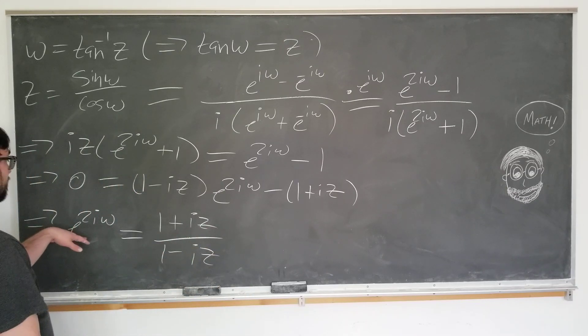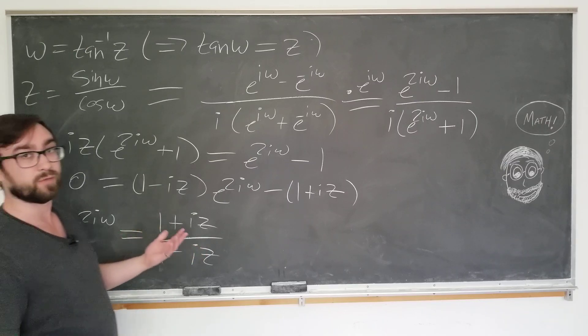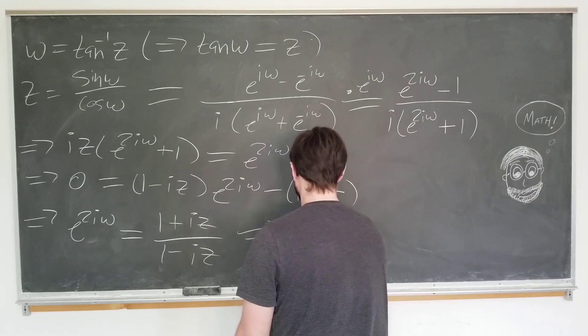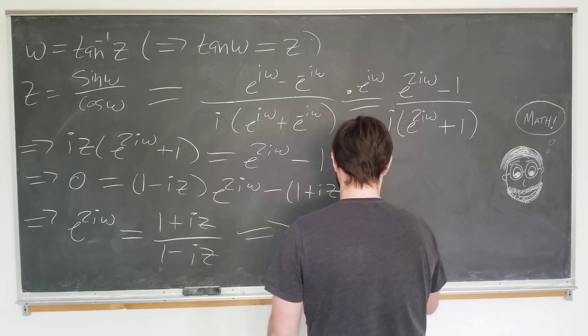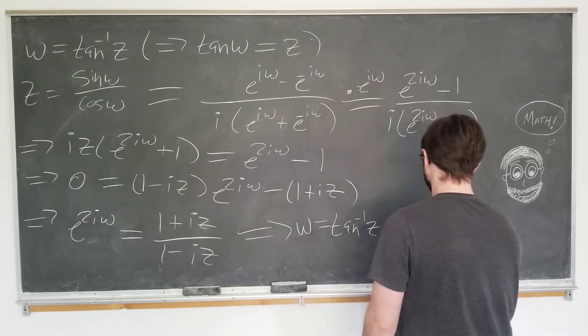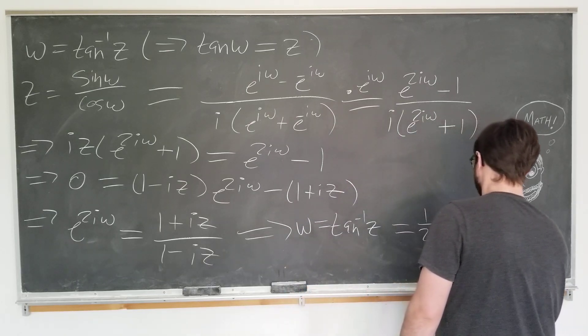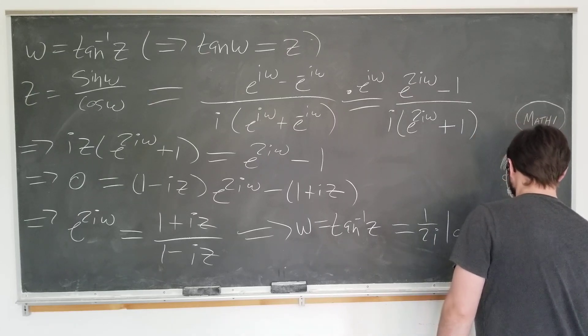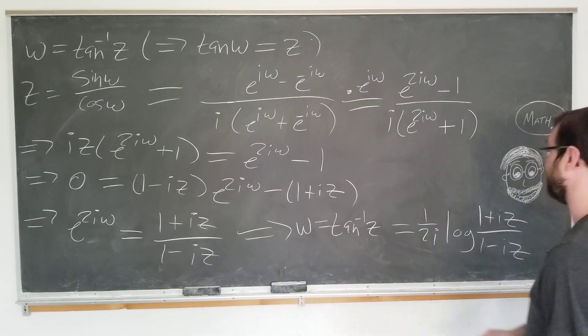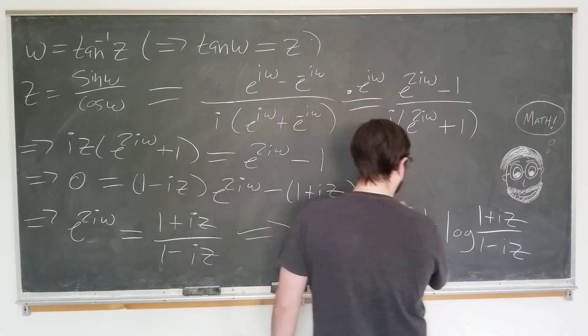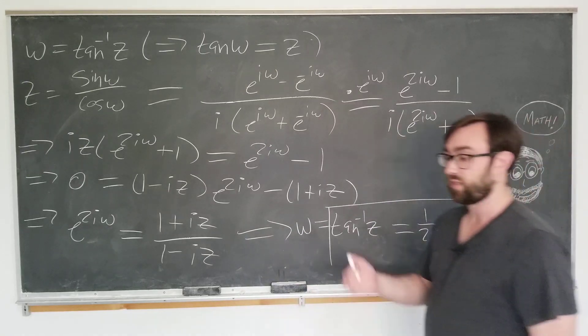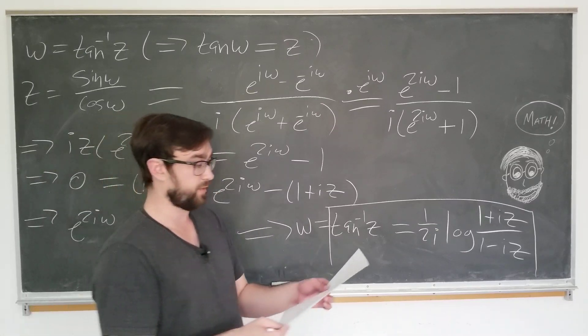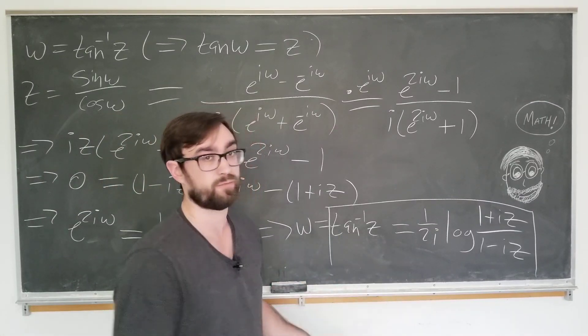e to the 2i omega is simply equal to 1 plus i z over 1 minus i z. We can easily now take the log of both sides and divide by 1 over 2i to get the final answer. We have omega, which is actually equal to the arctangent of z, equal to 1 over 2i natural log of 1 plus i z over 1 minus i z. That's our cool formula.